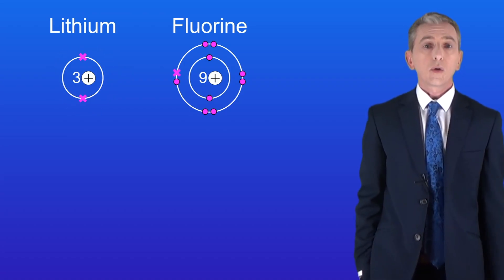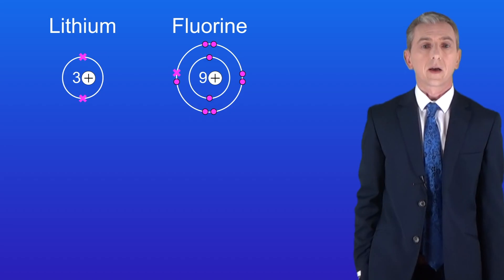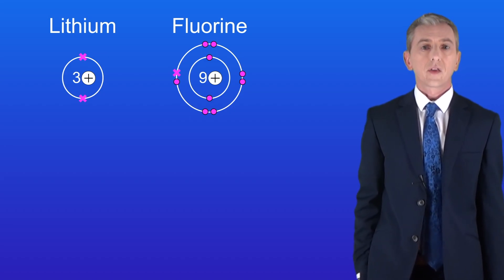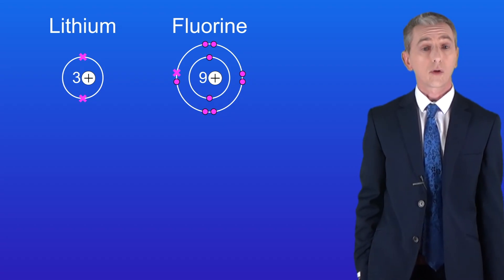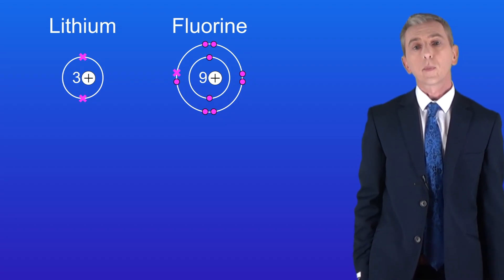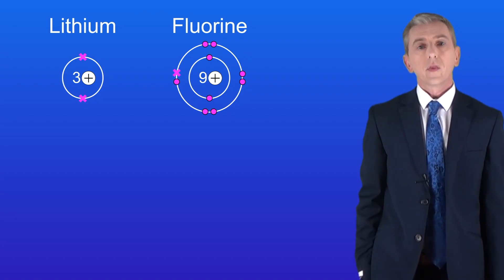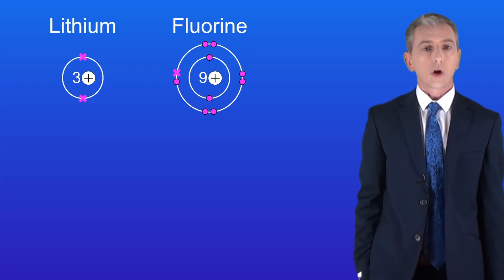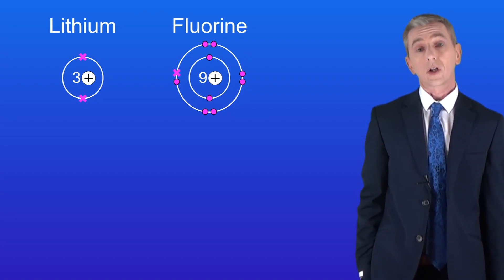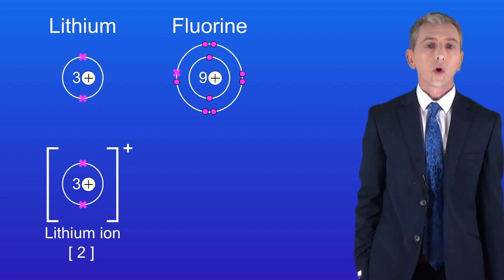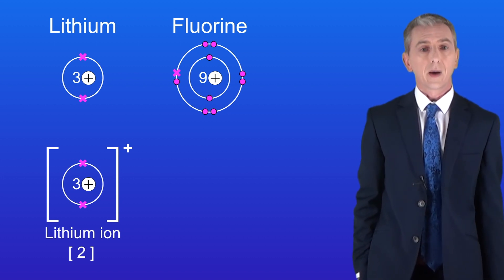Now both the lithium atom and the fluorine atom have got full outer energy levels. Looking again at the lithium atom, we can see that it still contains three positive protons, but now we've only got two negative electrons. This means that it now has one overall positive charge. We call this the lithium ion — an ion is an atom with an overall charge.